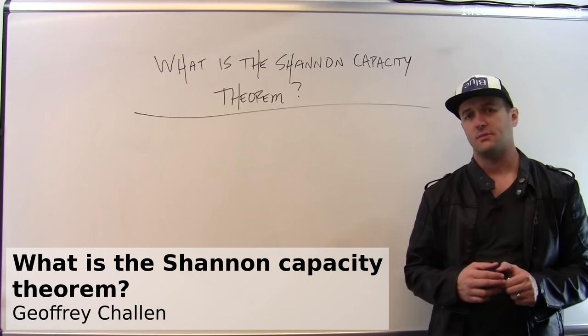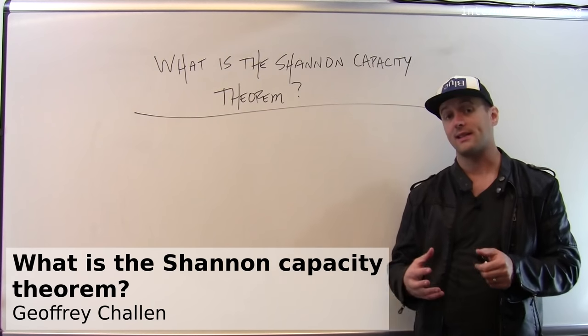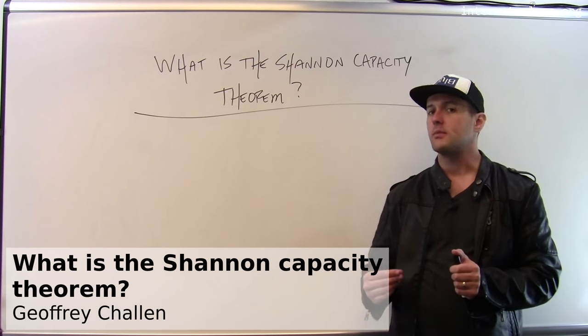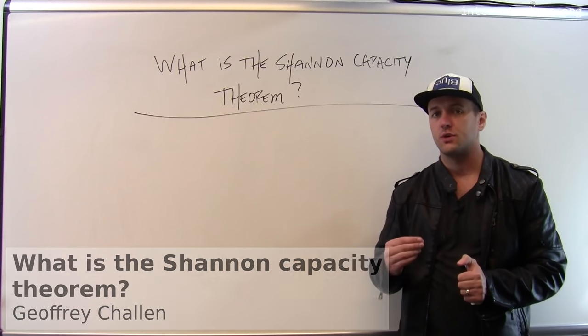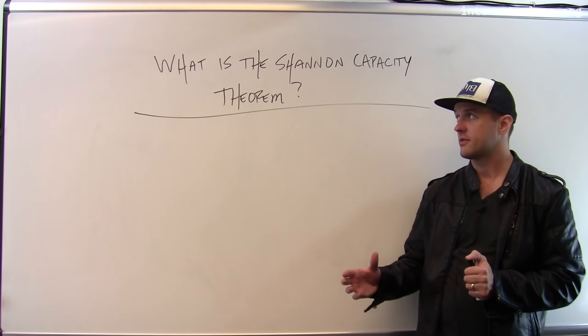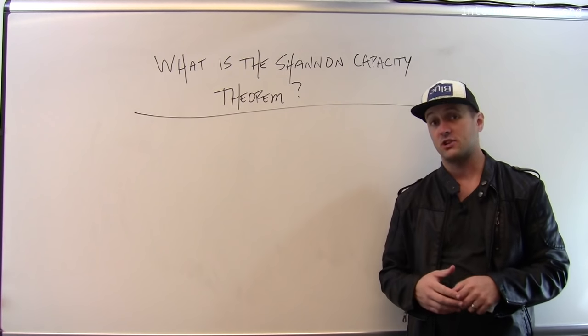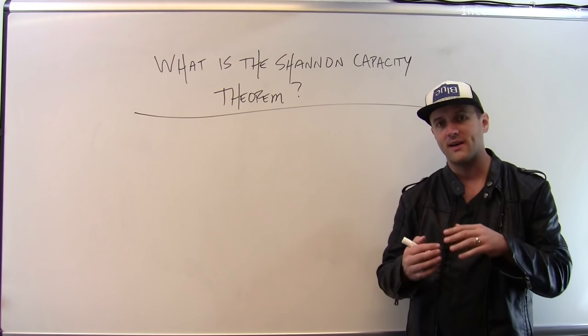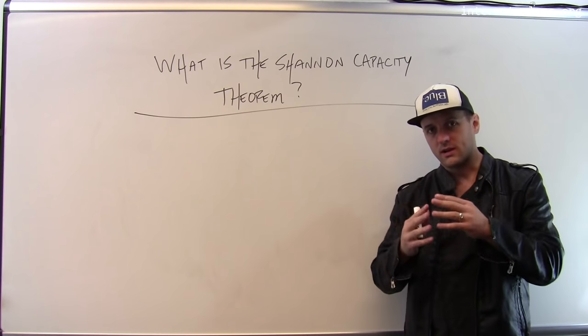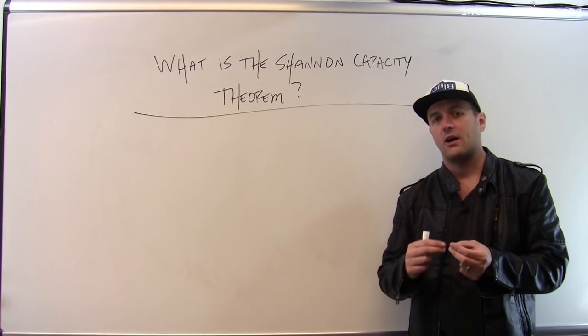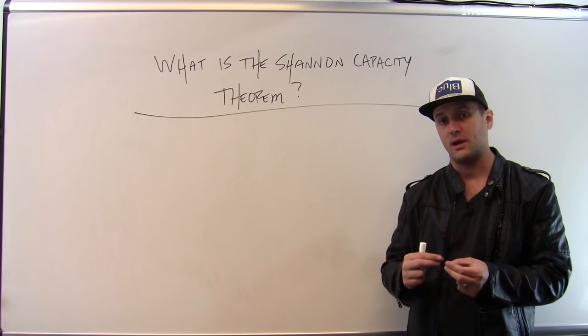Long before wireless communication became such a part of our daily lives, researchers had actually established fundamental limits on the rate at which we can communicate over wireless channels. The foundational theorem in this area is known as the Shannon Capacity Theorem. The Shannon Capacity Theorem for a particular wireless link sets an upper bound on how fast I can transmit information over that link.